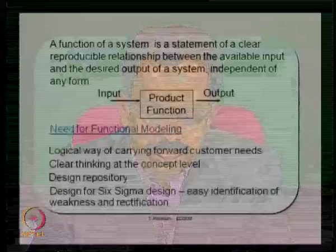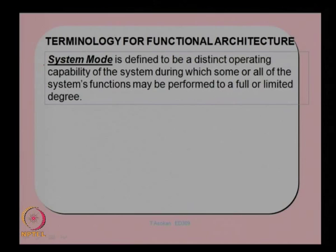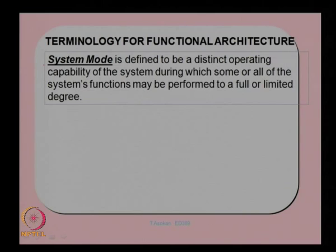We will discuss a few terminologies for functional architecture. One is known as system modes. A system mode is defined as a distinct operating capability of the system during which some or all of the system's functions may be performed to a full or limited degree. It is not the complete capability of the system — it is only a particular operating mode.